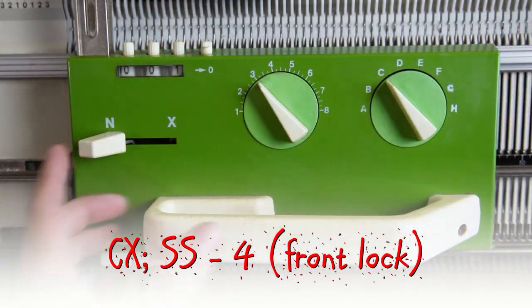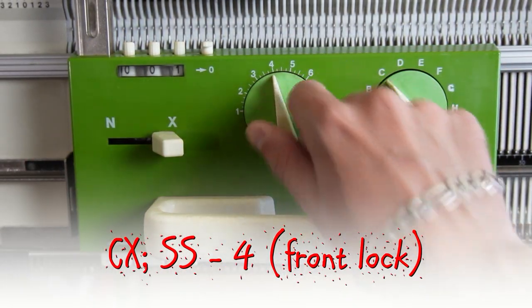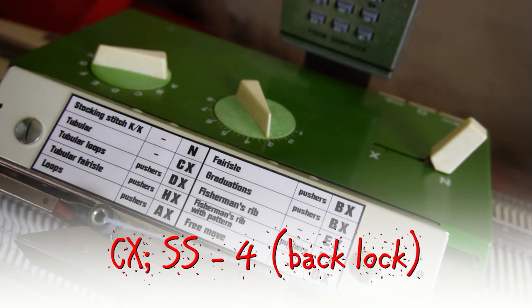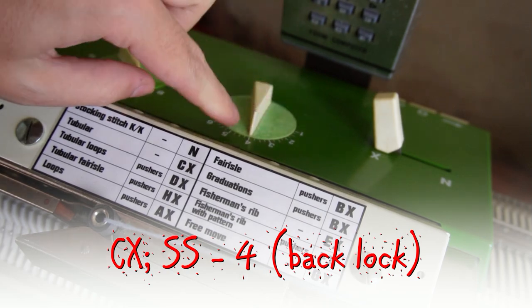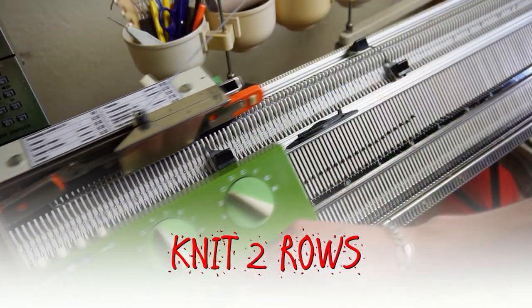Set both locks to CX and increase the stitch size to 4. Now knit two rows.